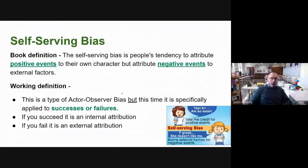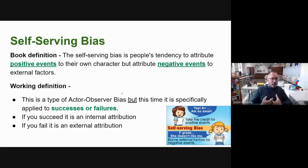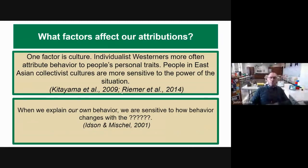Underneath the actor-observer effect, put self-serving bias. The self-serving bias is our tendency to attribute our successes to our own internal things and our failures to something external. The actor-observer effect is how we attribute all our behavior; self-serving bias specifically concerns successes and failures. As an AP teacher, when you get a five on the AP exam you'll attribute your success to how wonderful and hardworking you are, but if you get a one, I am a horrible teacher - that's the self-serving bias.